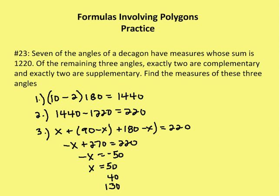Number 23, last question. Seven of the angles of a decagon have measures whose sum is 1,220 degrees. Of the remaining three angles, exactly two are complementary and exactly two are supplementary. Find the measures of these three angles.